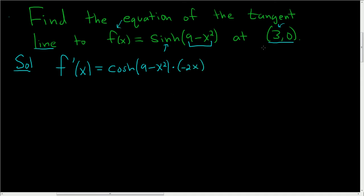And now all we have to do is plug in 3. So f prime of 3, that's the cosh. Well, here we get 9, and 3 squared is also 9, so we get 9 minus 9. And then here we get negative 2 times 3. So this is cosh of 0 times negative 6. And the cosh of 0 is 1, and here we have negative 6, so this is negative 6.